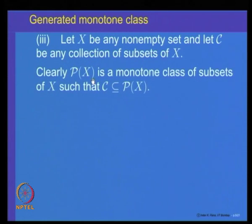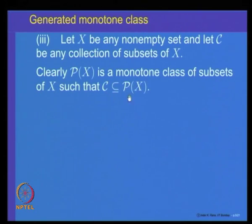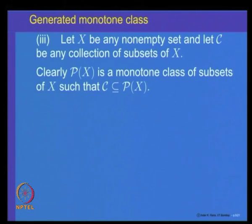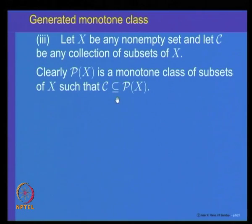The collection of all subsets of X — the power set — is a monotone class. Given any collection C of subsets of X, it is always included in the power set of X, which is a monotone class. However, this is too large. We want the smallest monotone class including C, and we need to determine whether such a thing exists.